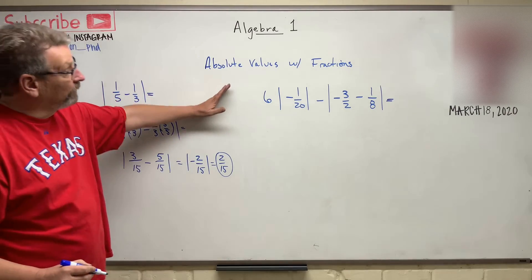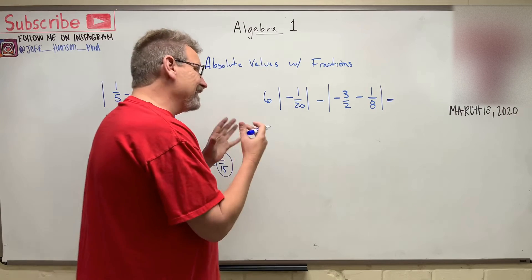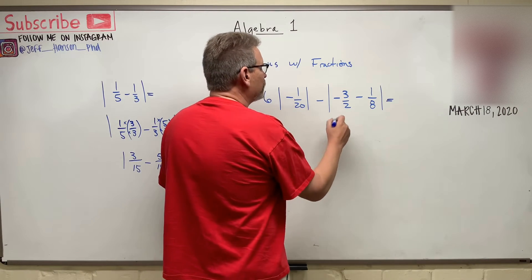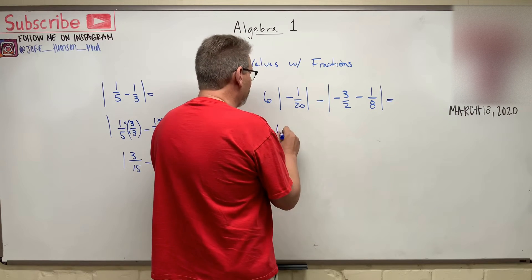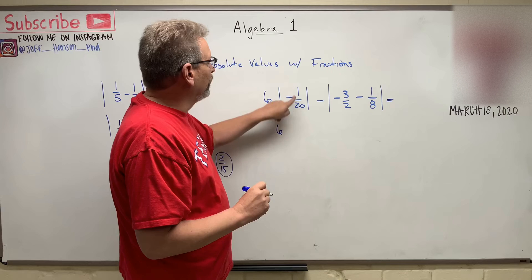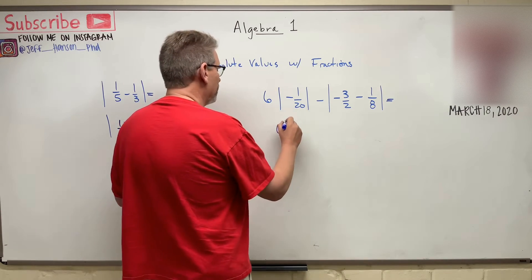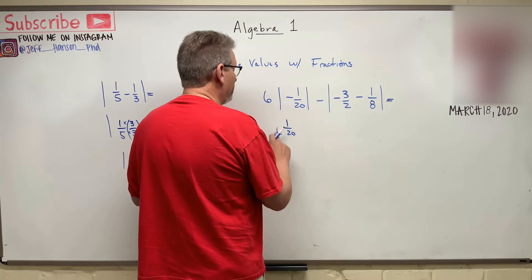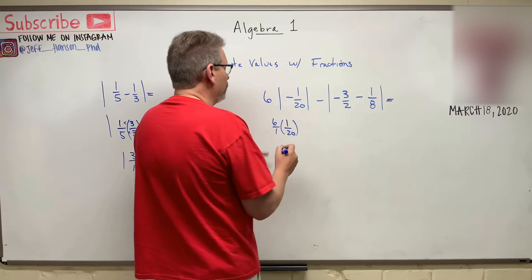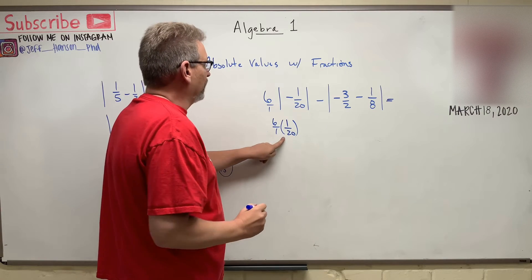Let's try this guy over here. This looks a lot harder, doesn't it? Not really if we treat what's inside the brackets by itself. So here we go. Let's start with just what's inside of here. I'm going to leave this alone. Actually, what is the absolute value of negative 1 twentieth? Just 1 twentieth. And I'm going to put 6 over 1. I can do that anytime, I can just put a 1 under him, and that's good.